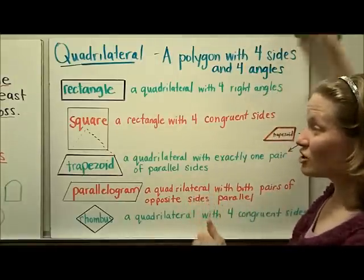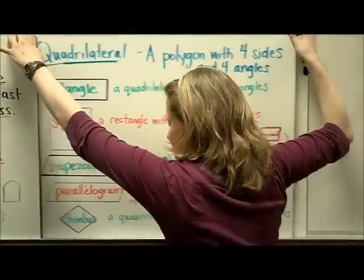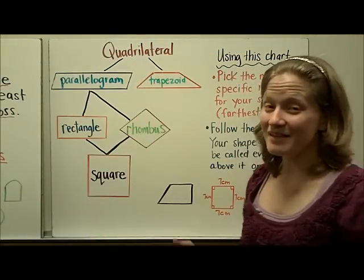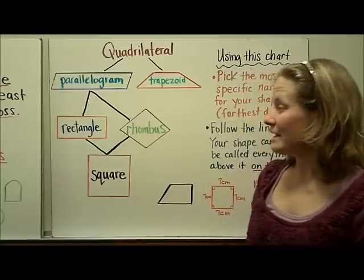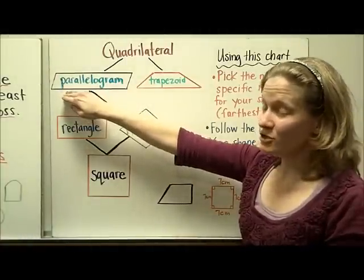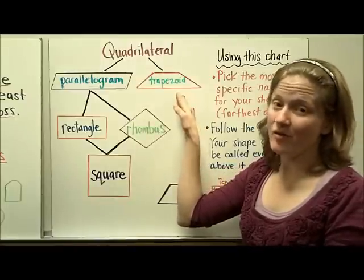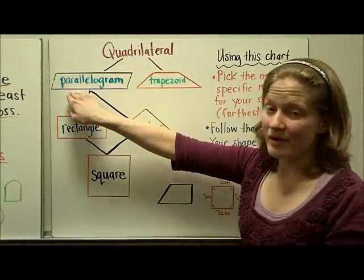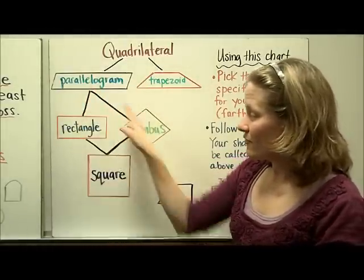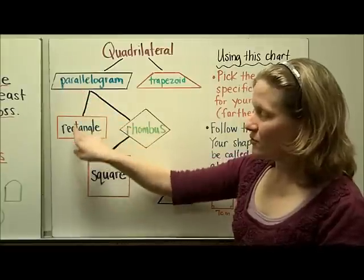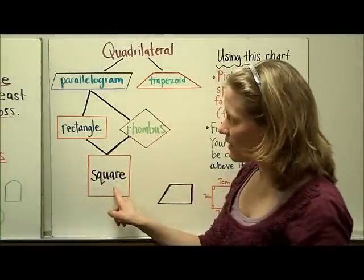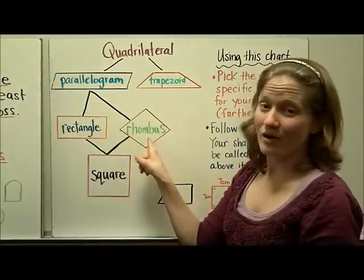The next thing is a chart that will help you keep track of all of that. This diagram is the easiest way to know how the shapes are related. We start with quadrilaterals and sort them two ways: shapes with two pairs of parallel sides become parallelograms, and those with only one pair of parallel sides are trapezoids. A rectangle has four right angles, a rhombus has four congruent sides, and a square has both four right angles and four congruent sides.